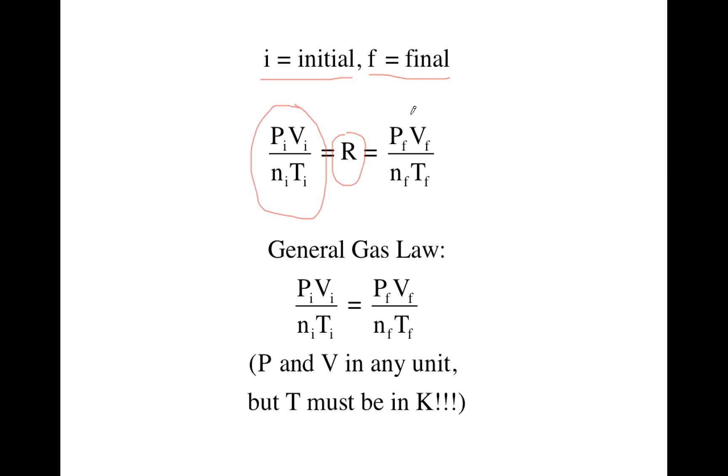Then if something happens to each of those properties and they change, so even though all four might be different than they were initially, all four final values might be different, if you find that ratio again, PV over NT using the final values, it'll still equal R.